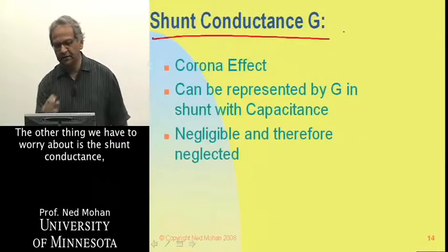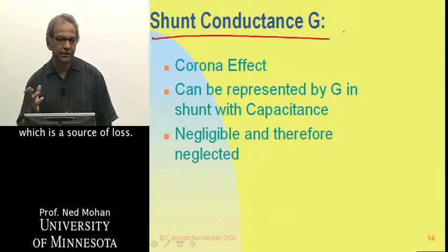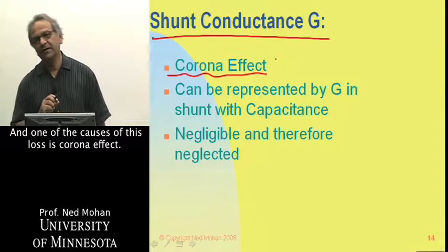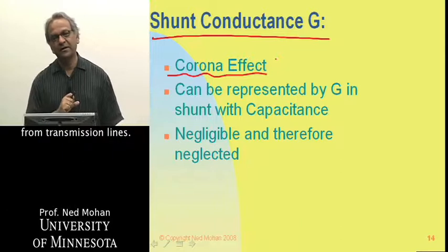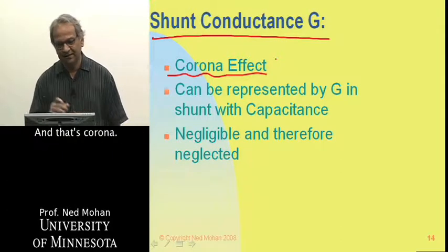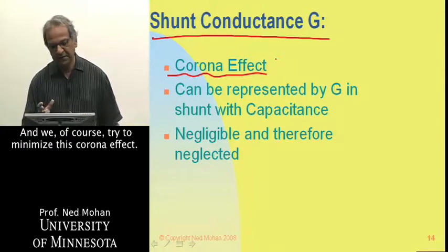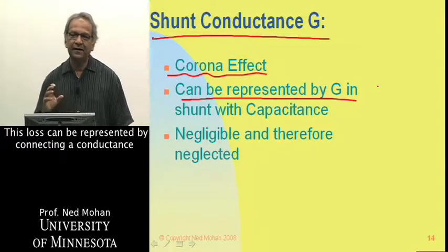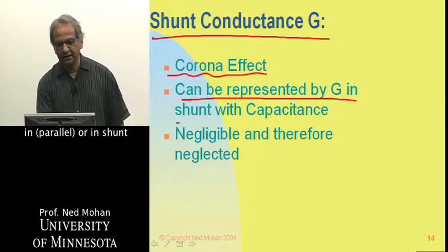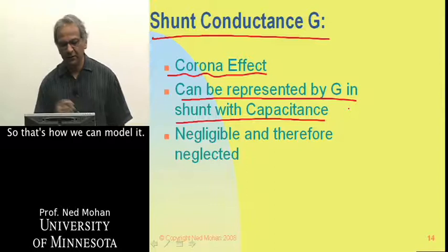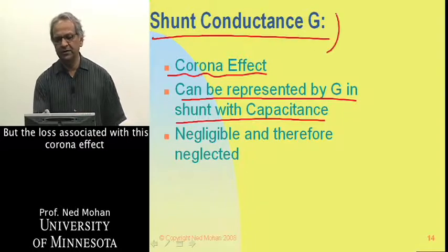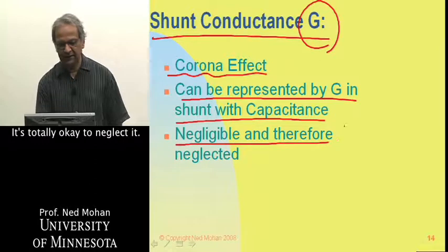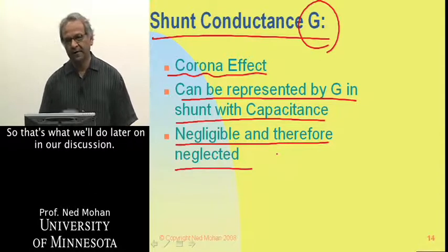The other thing to consider is shunt conductance, which is a source of loss. One cause is the corona effect — the familiar hissing sound from transmission lines, especially under misty conditions. We try to minimize corona, and this loss can be represented by connecting a conductance in shunt with the transmission line capacitance. However, the loss associated with corona and leakage currents is so small that it is totally acceptable to neglect it, which is what we will do in our further discussion.